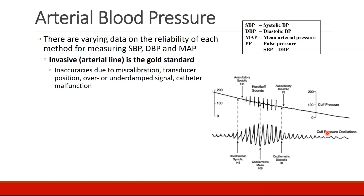How do we measure arterial blood pressure? There are varying data on how reliable each method is. The gold standard is the invasive arterial line, where we place a catheter into an artery to directly measure pressures. Inaccuracies would be due to miscalibration, problems with transducer position, over- or under-damping of the signal, or other malfunction.